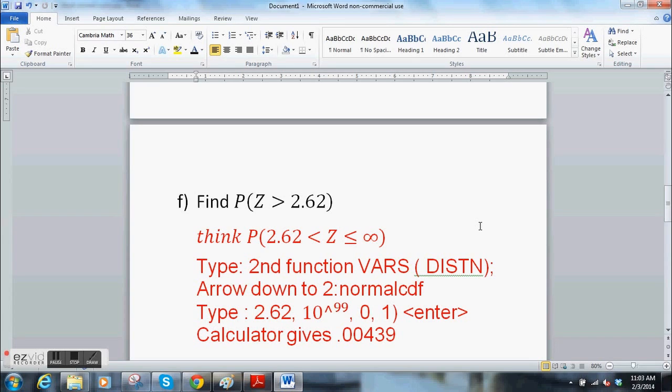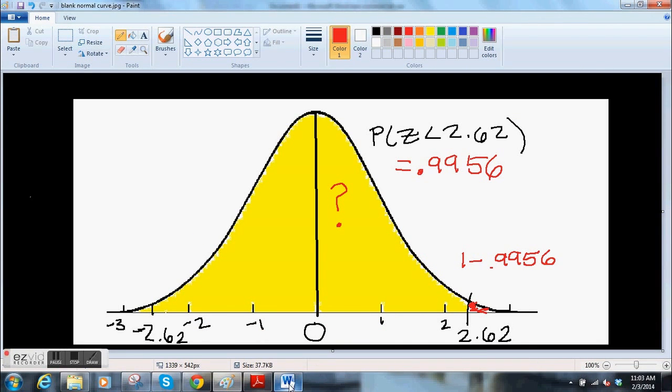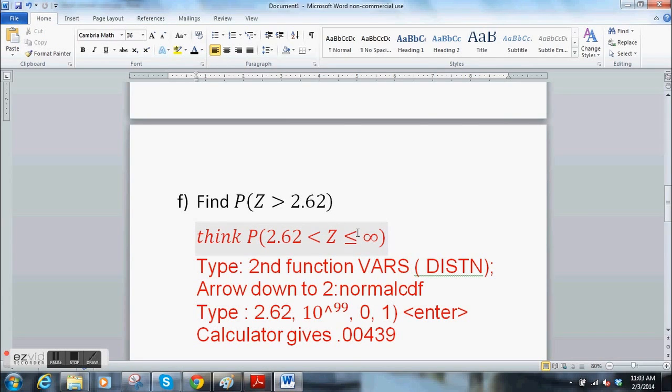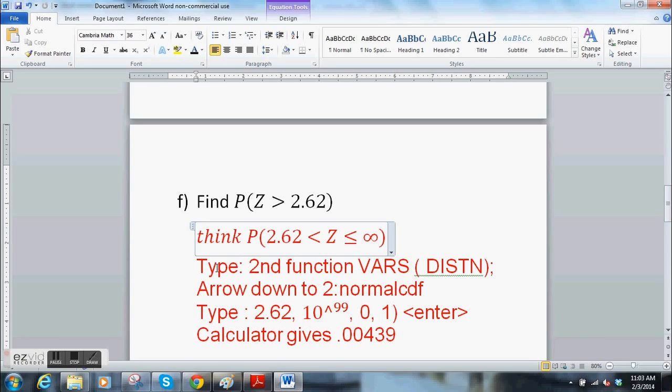So Z greater than 2.62. Again, you want to think about the two boundaries when you're using your calculator. So it's 2.62, Z is between 2.62 and positive infinity. So it's everything from here up to positive infinity. Sometimes I go back and forth. It doesn't really matter because it's the area of a line. So here's what you do. I write this in the margins of my paper. 2.62 and infinity. So you type second function variables, then you arrow down to normalcdf.